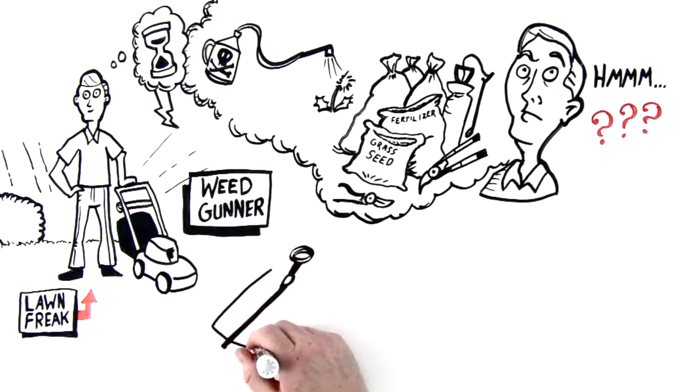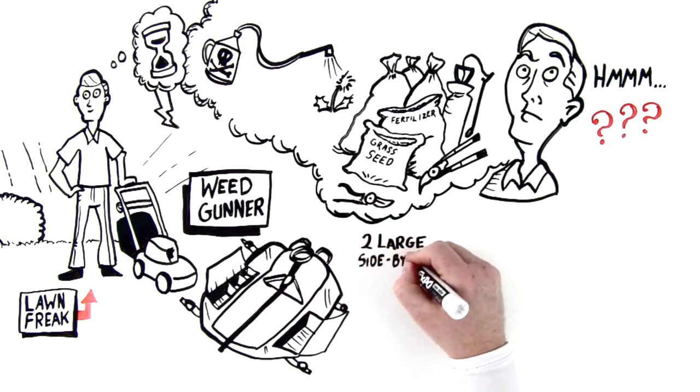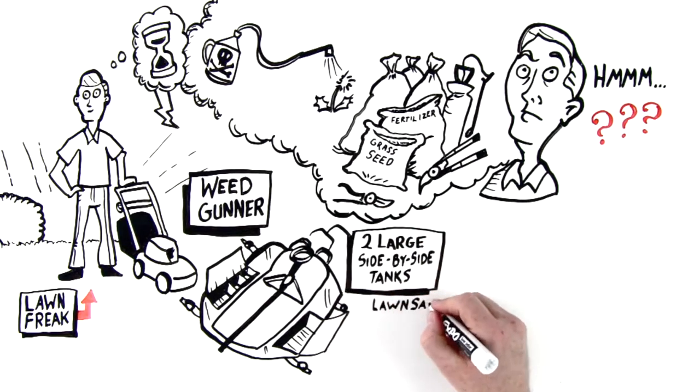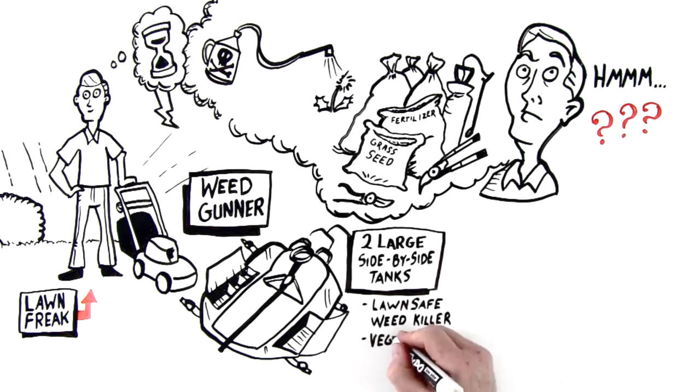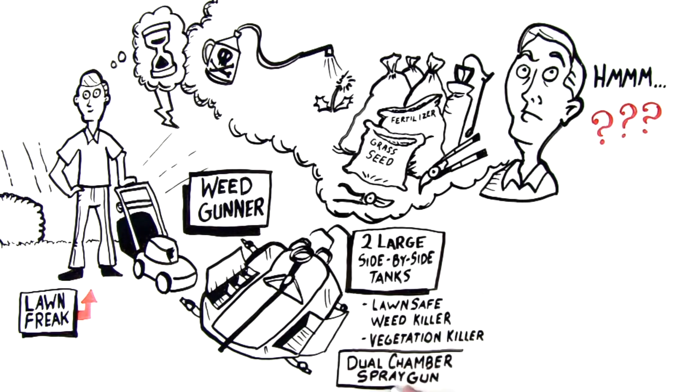Introducing Weed Gunner. Weed Gunner is equipped with two large side-by-side tanks, one for lawn-safe weed killer and one for vegetation killer, plus a powerful dual-chamber spray gun which surgically strikes the bad stuff.